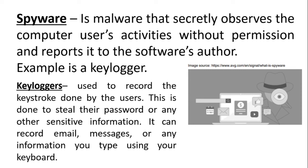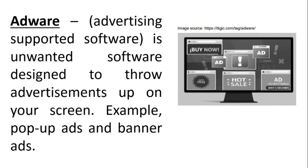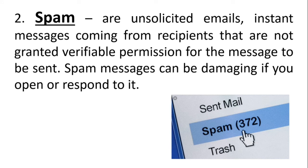A keylogger can record email messages or any information you type using your keyboard. Adware (advertising-supported software) is unwanted software designed to throw advertisements up on your screen — examples include pop-up ads and banner ads. Spam refers to unsolicited emails or instant messages from senders who have not been granted permission to send the message. Spam messages can be damaging if you open or respond to them.